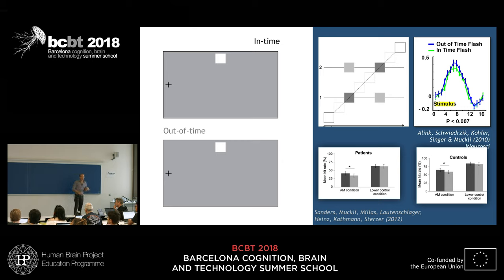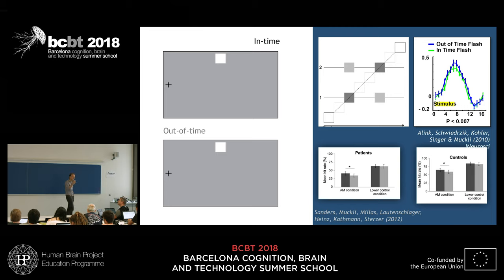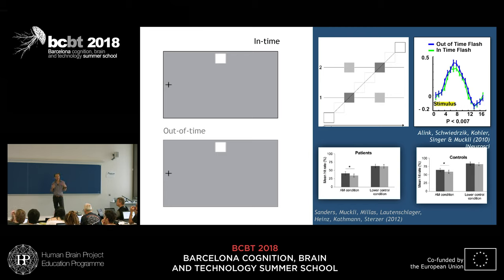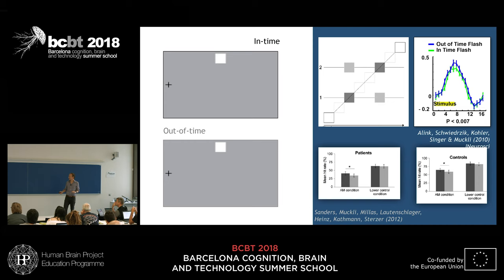Interestingly, in fMRI the out-of-time flash creates a stronger signal than the in-time stimulus. This is inconsistent with the idea that more brain activity means better detection, but consistent with predictive coding: if an internal model is confirmed you need less brain activity and can perceive it better. A prediction error calls for an update of the internal model. If not enough evidence is accumulated, the internal model does not update. Predictive processing explains why higher activity still doesn't lead to detection, whereas the internal model explaining away activity leads to better detection.